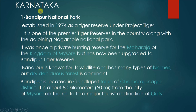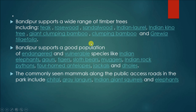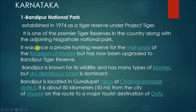Moving to Karnataka, Bandipur National Park was established in 1974 as a tiger reserve under Project Tiger. It is one of the premier tiger reserves in India, along with the adjoining Nagarhole National Park. It was once the private hunting reserve for the Maharaja of the Kingdom of Mysore, but has now been upgraded as Bandipur National Park.